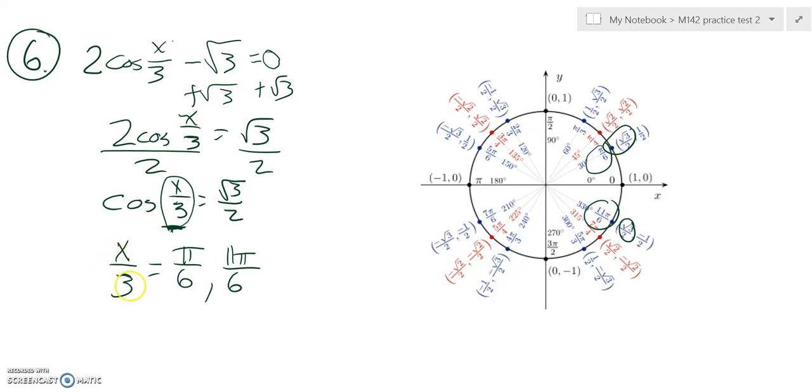So if I want to know what x is, multiply everything by 3. So I multiply both sides by 3, everything gets multiplied by 3. So what happens here is x divides out to π over 2, and then here that divides out to 22π.